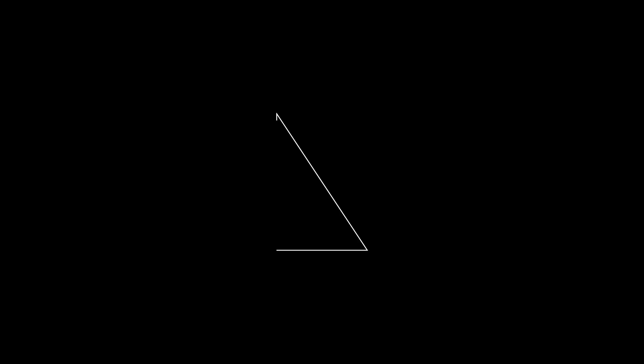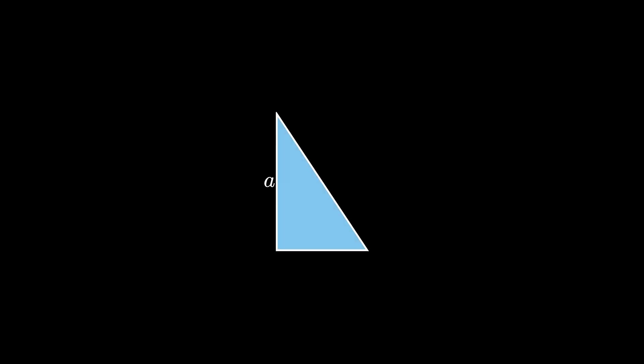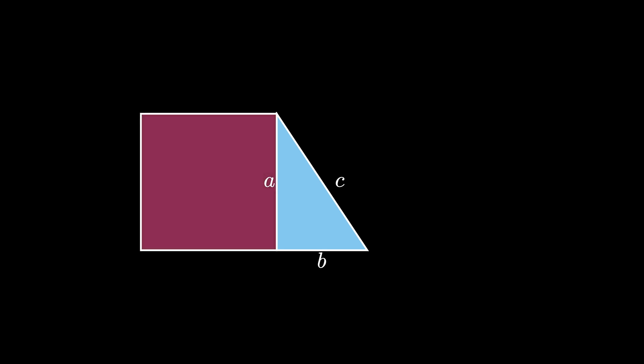Start with a right triangle with leg lengths a and b and a hypotenuse of length c. Off of the leg of length a, draw an a by a square which has area a squared.